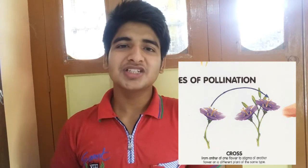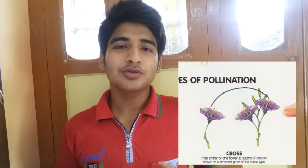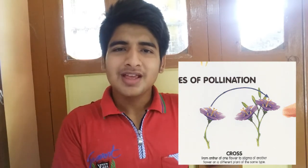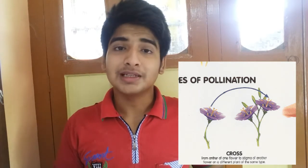Cross-pollination is when pollen goes from a flower of one tree and gets dropped down into a different flower of a different tree. The condition is that the two trees have to be of the same type. Cross-pollination also has three different types.